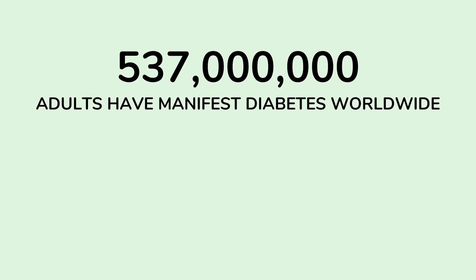Insulin resistance is a big problem and it's extremely common. In the United States, about 50% of the adult population — about 133 million people — have either diabetes or prediabetes. Even among young adult Americans between 18 and 44 years who do not have manifest diabetes, 40% are still insulin resistant. Worldwide, 537 million adults have manifest diabetes and another 541 million have prediabetes.